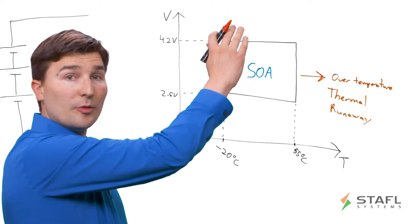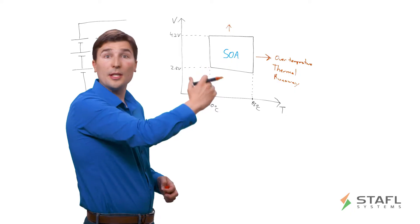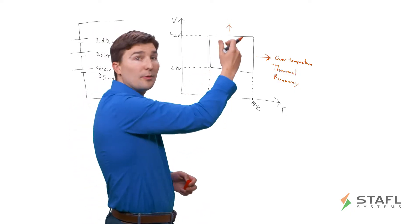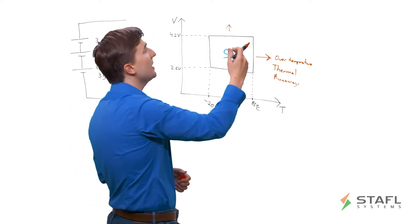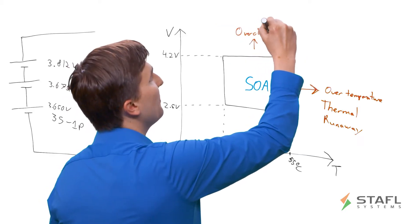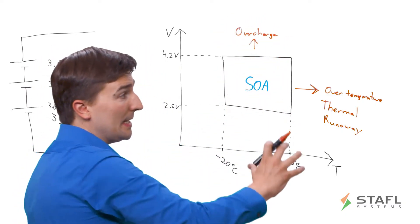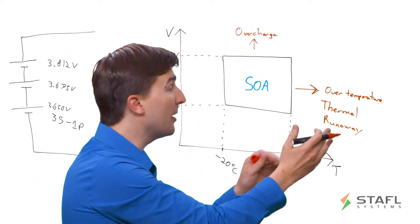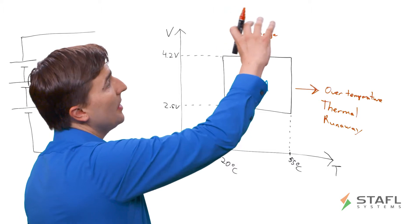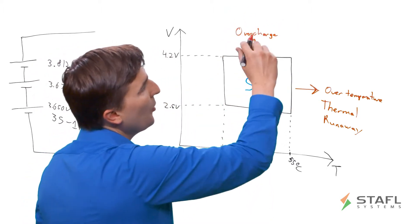So that's the over-temperature side. What about on the over-charged side? So this is if you have a lithium-ion cell that goes above, say, 4.2 volts per cell. If you start climbing to 4.4, 4.5, 4.6, what you do is you enter into what's called the over-charge regime. And what this can trigger is, in effect, it can actually trigger a thermal runaway because the cell no longer can safely hold that charge.